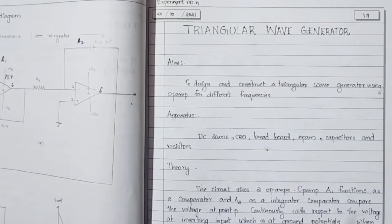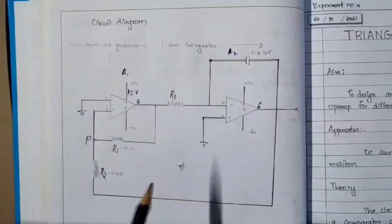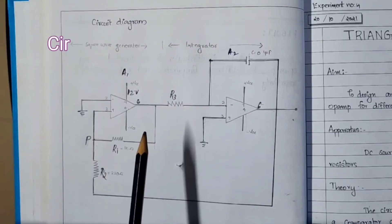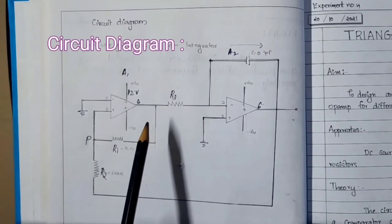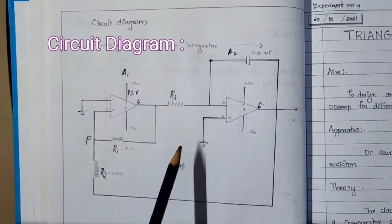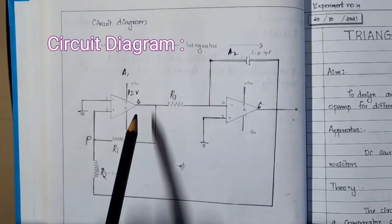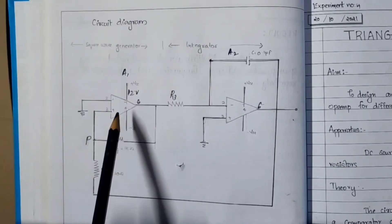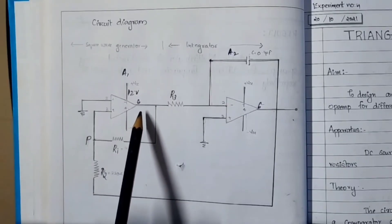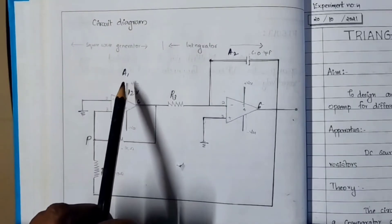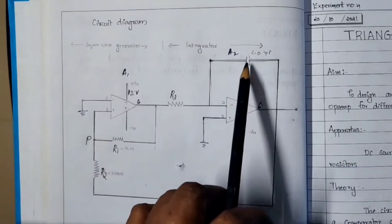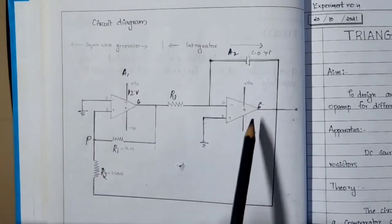First, let us go to the simple circuit diagram of the triangular wave generator. This is a simple connection for triangular wave generation. As you can see, we use two op-amps, IC741. The first one is designated as A1 and the second one as A2.